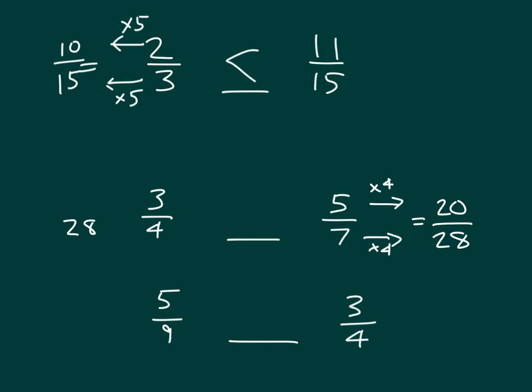3 fourths equals how many 28ths so that I have common units? Multiplied by 7 and multiplied by 7. 3 times 7 is 21. So 21 28ths is bigger than 20 28ths. That is, 3 fourths is bigger than 5 sevenths.